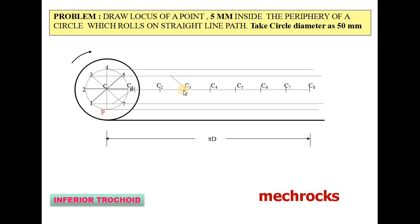Now similarly, C2, P3 as the center, 20 as the radius, cut the 3rd line. From C4 as the center, 20 as the radius, cut the 4th line. C5, C6, and C7. C7 as the center, 20 as the radius, cut the 7th line. And C8.